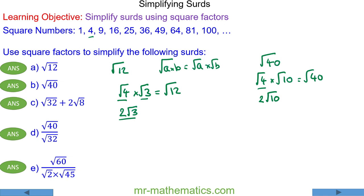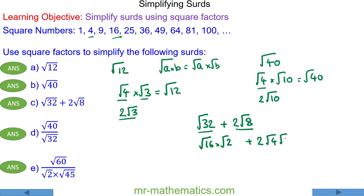Moving on to question c, we have the square root of 32 plus 2 times the square root of 8. Now 4 does go into 32, but so does 16, and because 16 is bigger I'm going to choose it. So we have √16 × √2 plus 2 × √4 × √2, since √4 × √2 makes √8. The square root of 16 is 4.